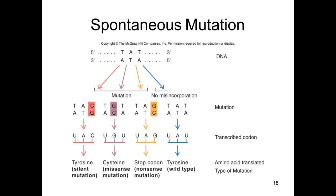The next possibility is that the genotype changes, we get a mutation, and the amino acid changes — a different amino acid gets placed there. We call this a missense mutation because sense codons code for amino acids, but in this case it's a missense — a mistake was made, and a different amino acid gets put there than the original one that was supposed to be.